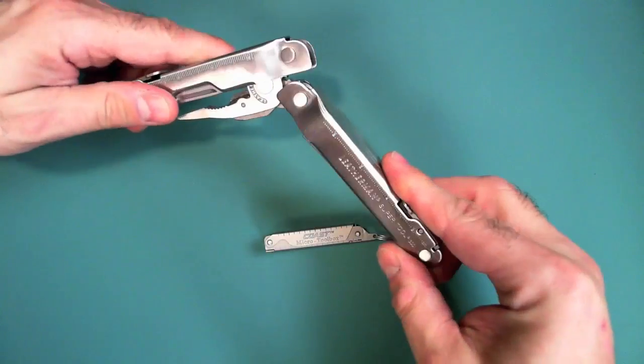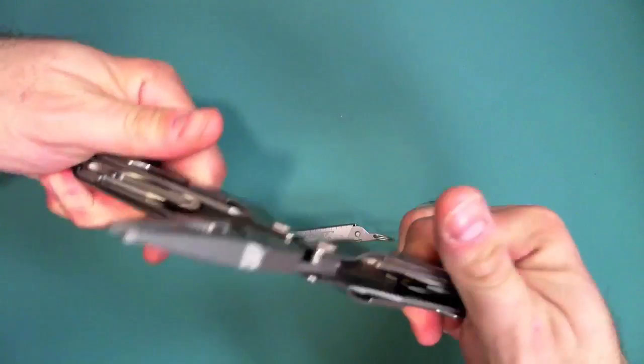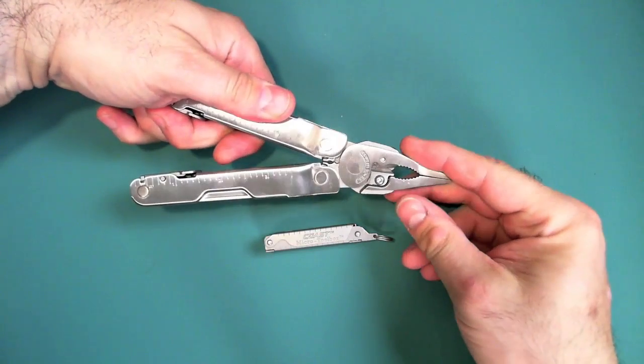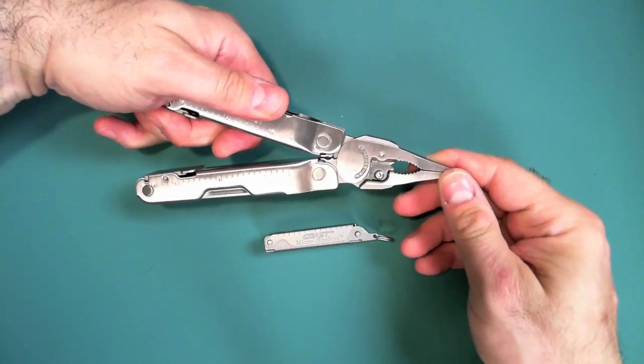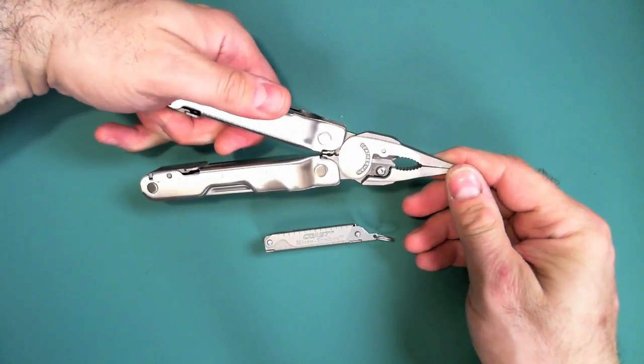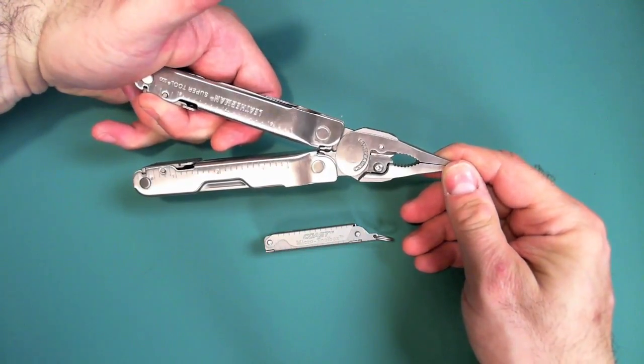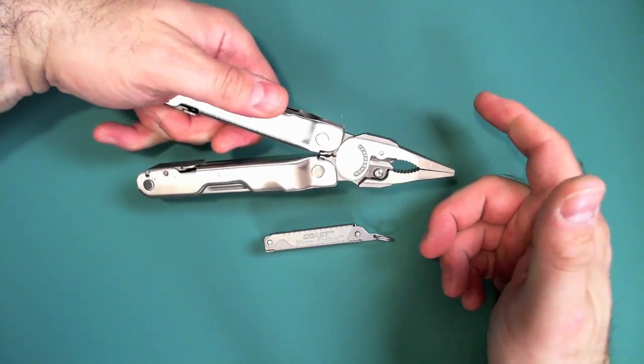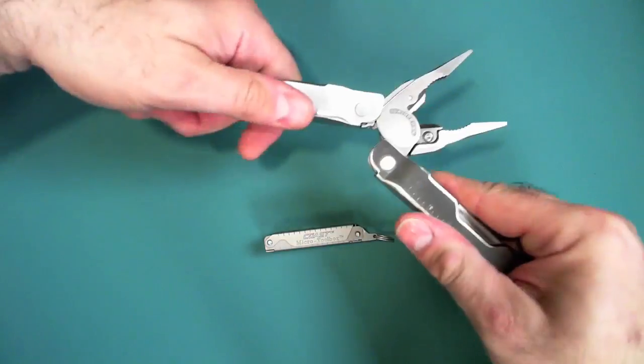And by the way, this is the Leatherman Super Tool. But you know that this thing is on you because it's heavy. It's taking up a lot of room, whether it's hanging off your belt or in your pocket. And for some people, they end up not carrying it. So then you're carrying nothing.